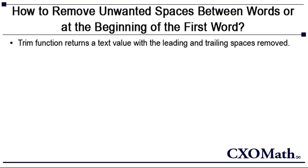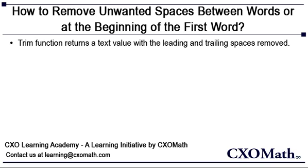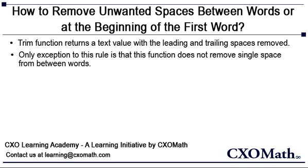TRIM function comes from the family of text functions. The TRIM function returns a text value with the leading and trailing spaces removed. The only exception is that this function does not remove a single space from between words. So if you want to trim a cell which has two words with one space in between, such as Steve and Jobs separated by a space, the TRIM function will not remove that single space. However, if there was a leading space before the first word, i.e. Steve, then it would trim that.